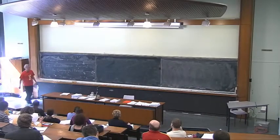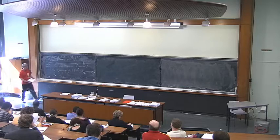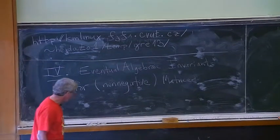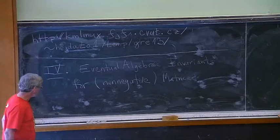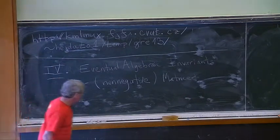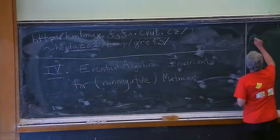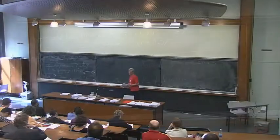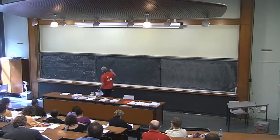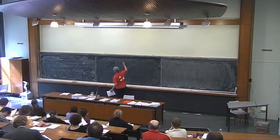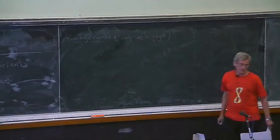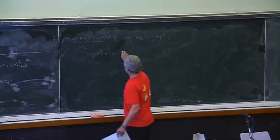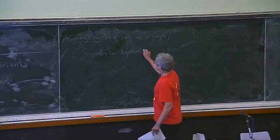So this was Perron-Frobenius, and related algebra. This is going to be more about the algebra—eventual algebraic invariance for matrices, in particular non-negative matrices. I haven't found time to type all this up yet, but I will type up some kind of follow-up to this lecture. There is some background on my home page on basic symbolic dynamics and some of the topics of the course: symbolic dynamics and matrices.